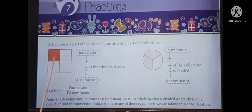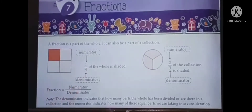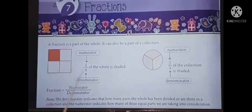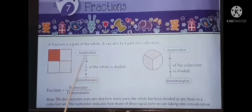This orange color shaded part is one — that is the numerator. This white color unshaded part is four — that is the denominator. One by fourth part is shaded. It is called one by fourth of a whole. One is numerator, four is denominator.